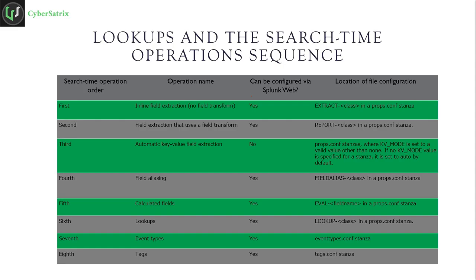Moving forward, whenever a search is executed, multiple operations are performed in a specific sequence. If you're running a query, you might have an eval command and key field extraction. In that case, key field extraction runs first, then calculated fields, then lookups. Depending on your search query, results may come faster or slower based on the sequence in which lookups are processed. I'll provide a link explaining the search time sequence in more detail.